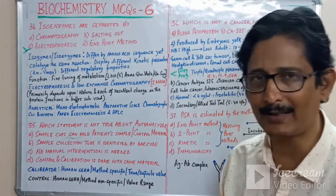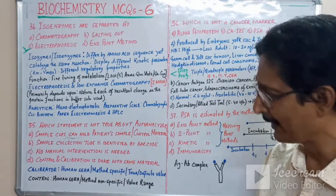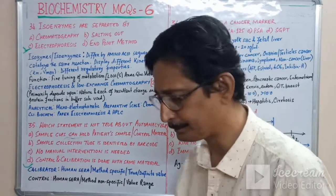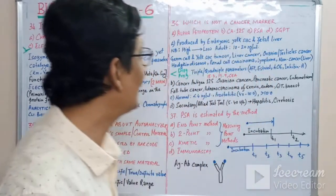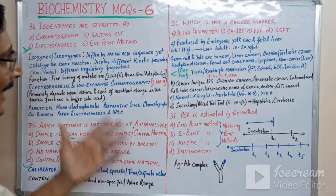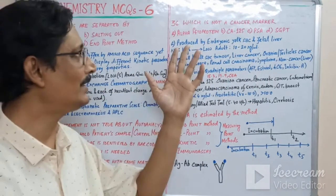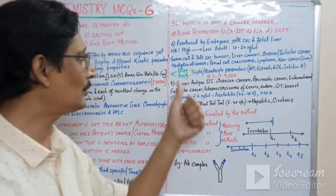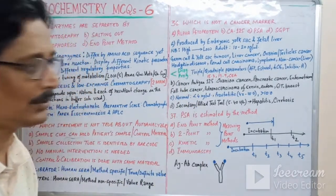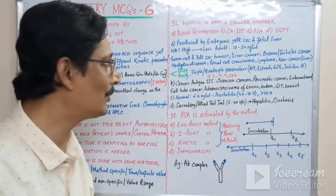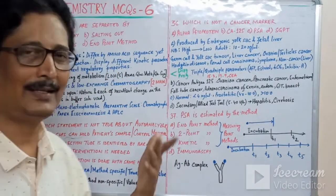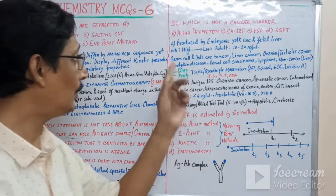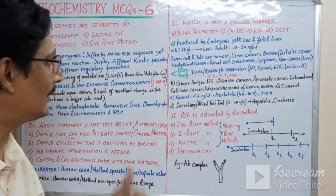So control and calibrator cannot be done with the same material, making option D the false statement — and therefore the right answer for question 35. Question 36 asks which is NOT a cancer marker: option A is alpha-fetoprotein, option B is CA 125, option C is PSA, and option D is SGPT.